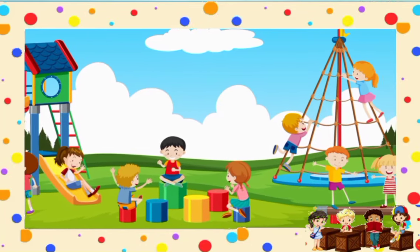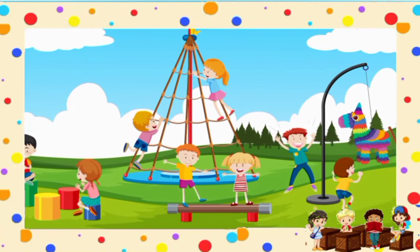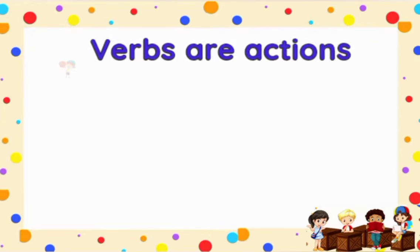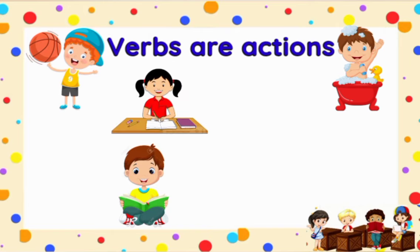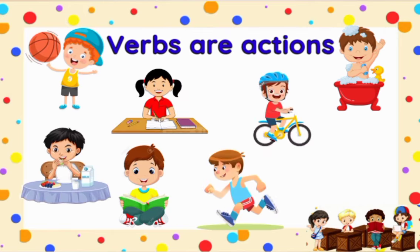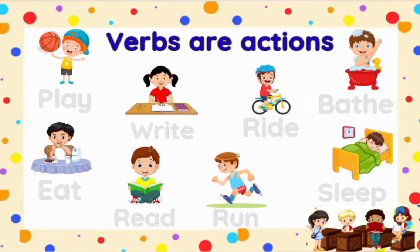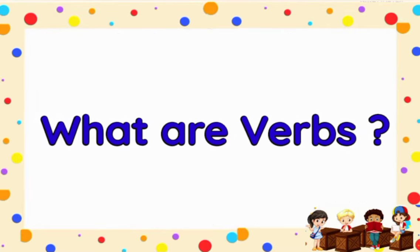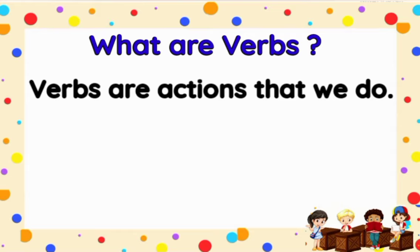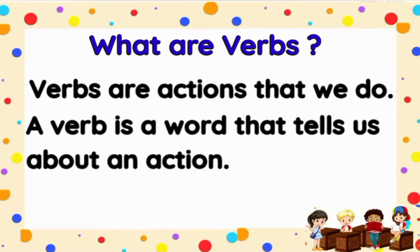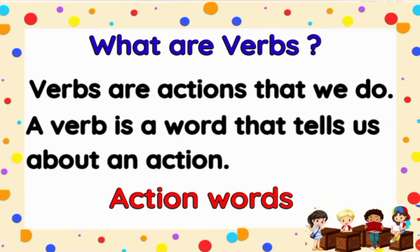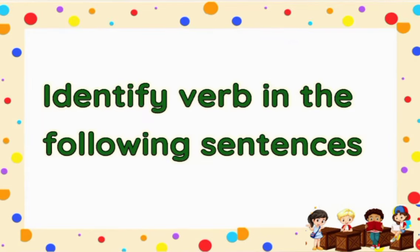We do a lot of activities in our day-to-day lives, such as we play, read, write, eat, run, or sleep. All these words that we use to describe our activities or actions are called action words. What are verbs? Verbs are actions that we do. A verb is a word that tells us about an action. We can also call them action words. Now let's understand this better with a few examples.